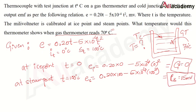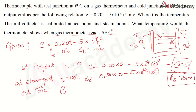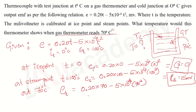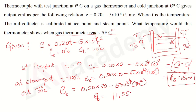We have identified EMF at steam point and at ice point. Similarly, at the given temperature of 70°C: E = 0.20×70 − 5×10⁻⁴×70² = 14 − 2.45 = 11.55 millivolts. So the EMF at the known temperature (E_T) is approximately 11.55 millivolts.